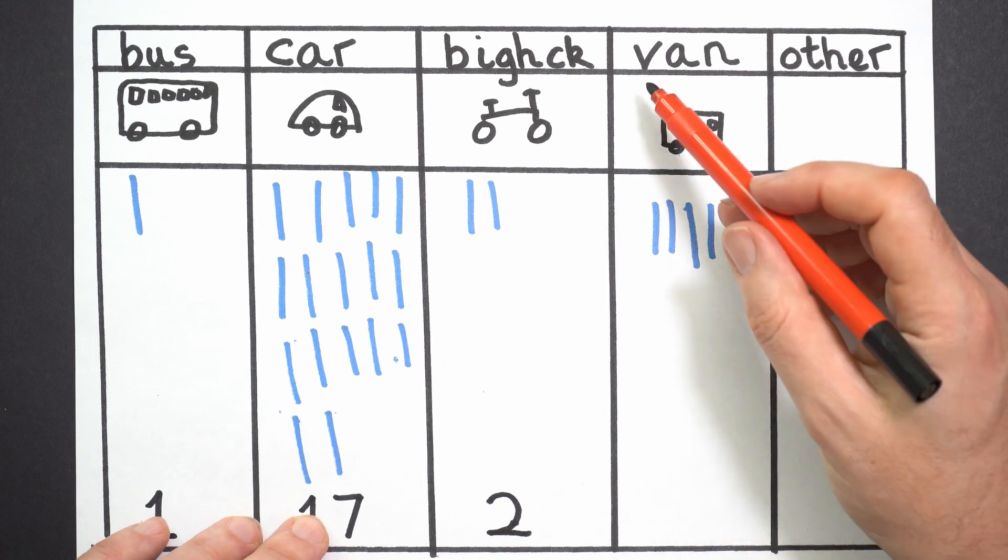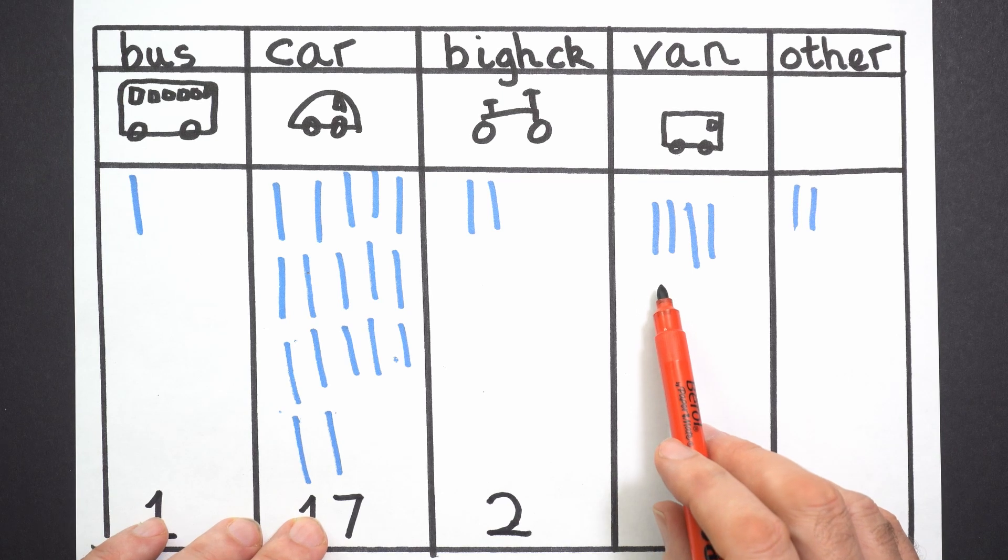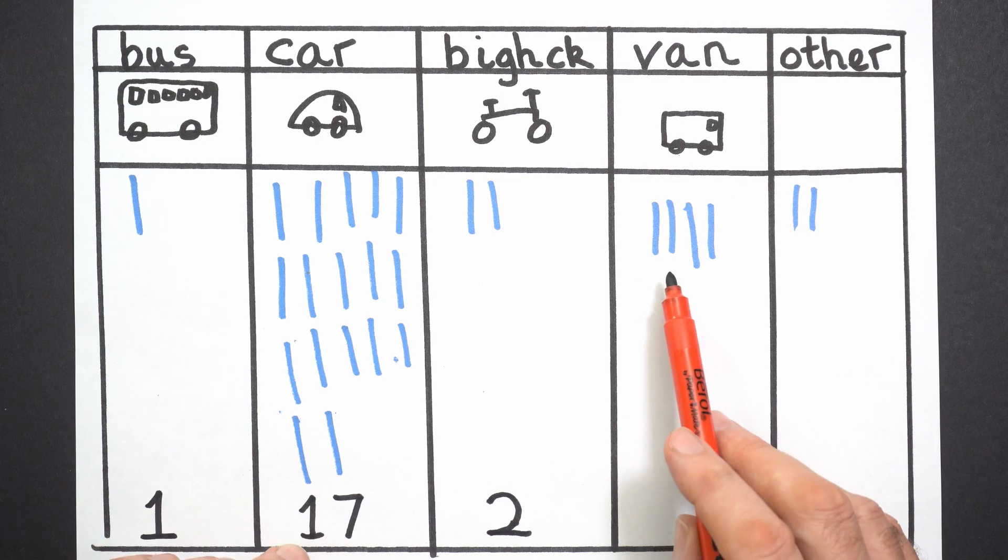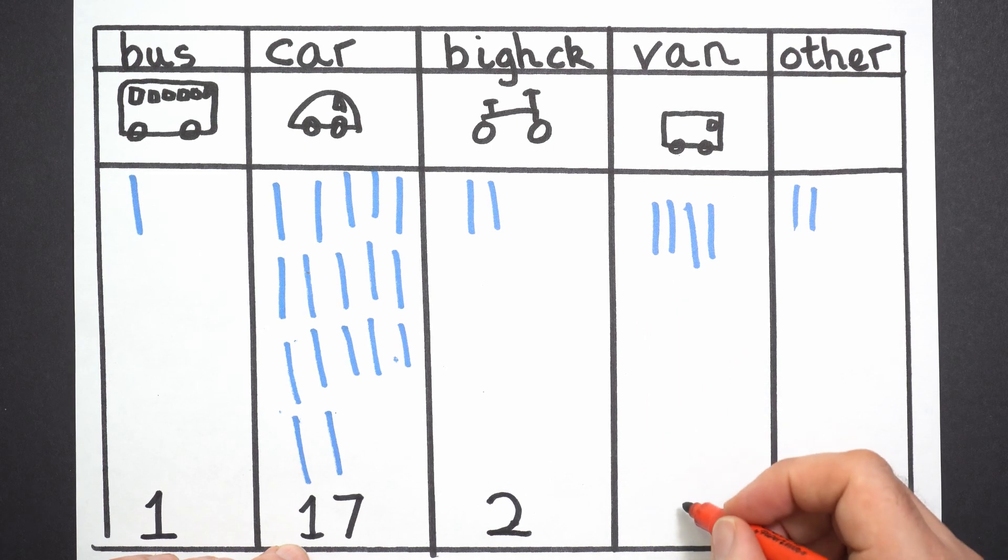And what's this? Van. How many vans were there? Can you show me with your fingers? Let's count the lines. One, two, three, four. So I'm going to write four.